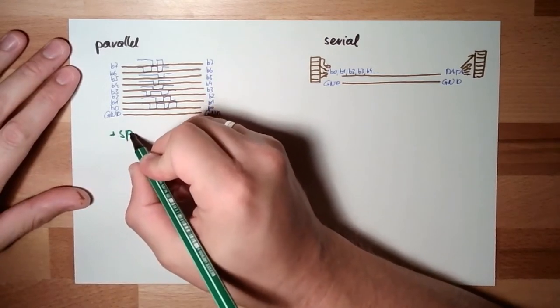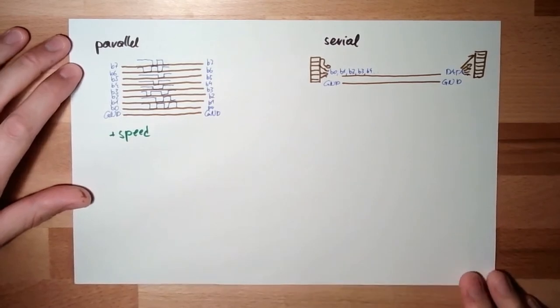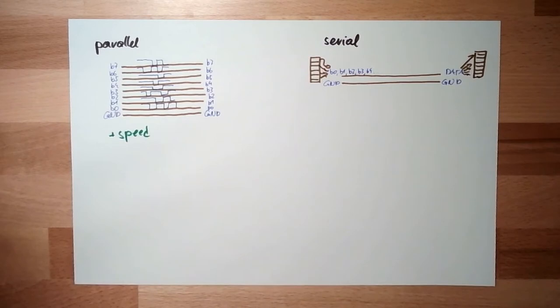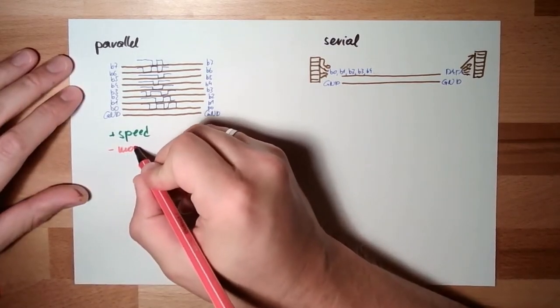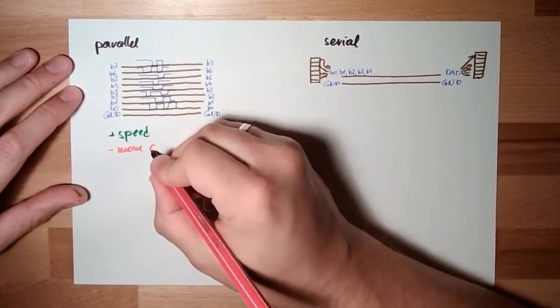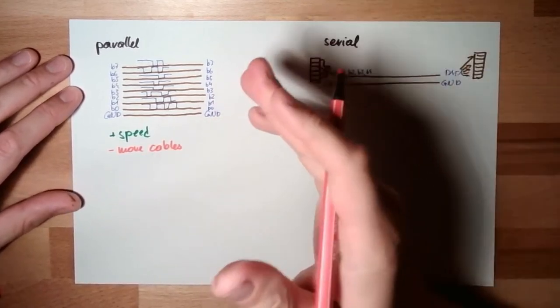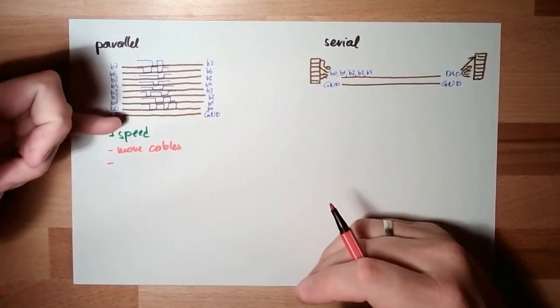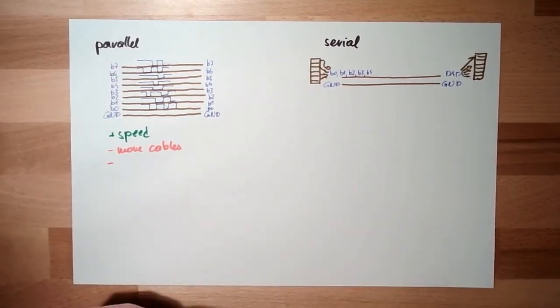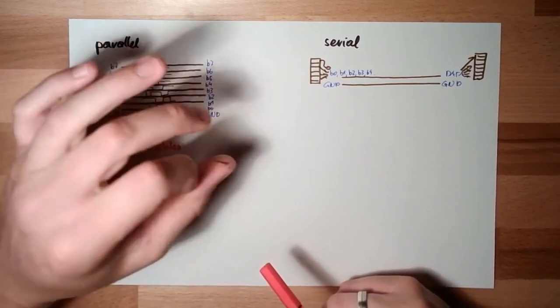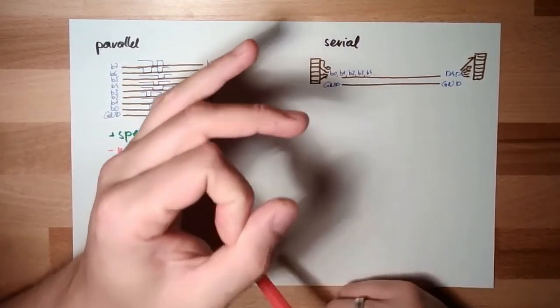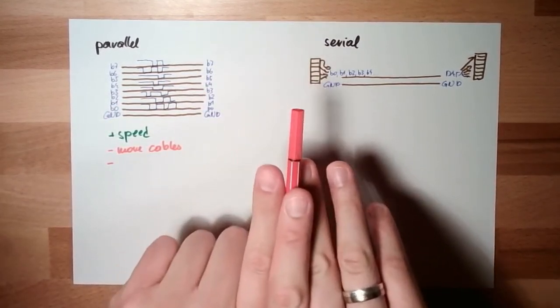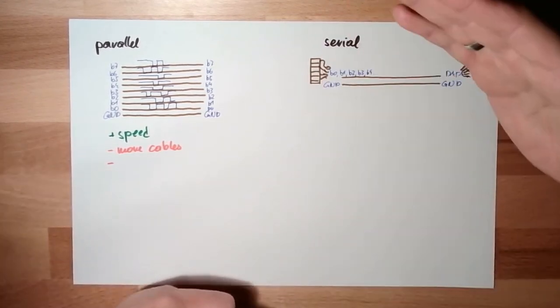Parallel. Speed is the advantage here. Disadvantage? More cables, more wires. The thing is, those cables, those wires, the single lines, they're not alone. They're usually in a thick cable. If two wires are going parallel over a prolonged way,